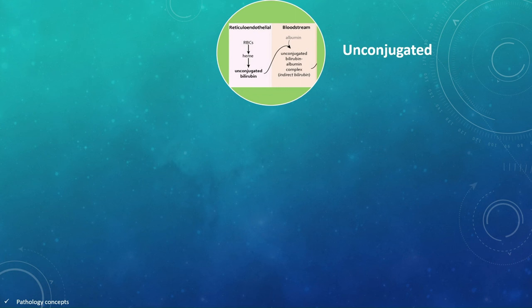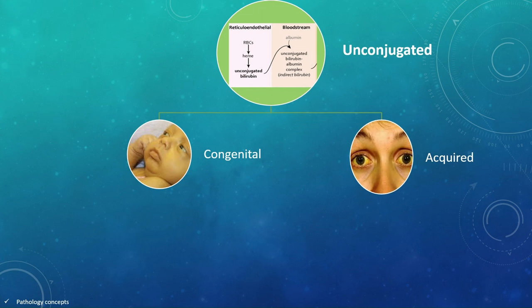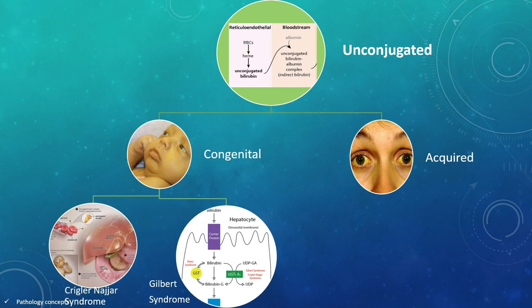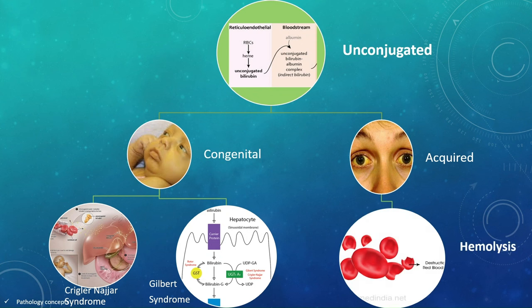Now let's see unconjugated bilirubin. The etiology may be congenital or acquired. There are two syndromes associated with congenital unconjugated hyperbilirubinemia: Crigler-Najjar syndrome and Gilbert syndrome. Acquired unconjugated hyperbilirubinemia may be due to hemolysis or due to certain drug ingestion.